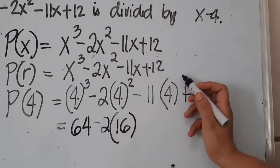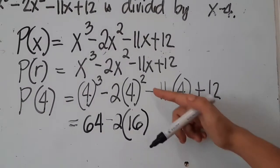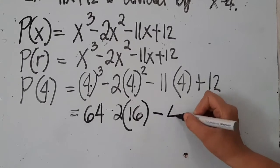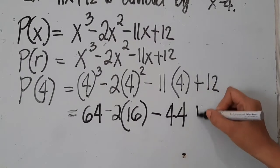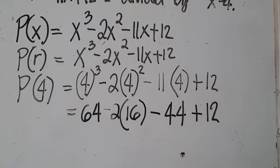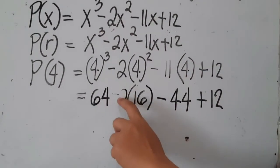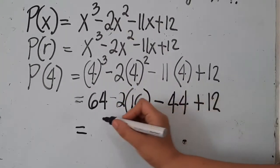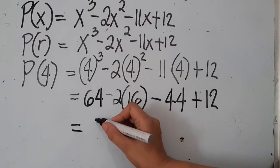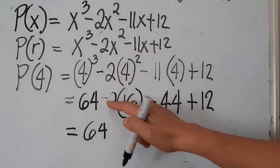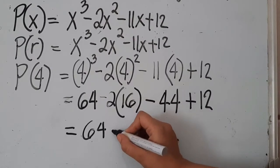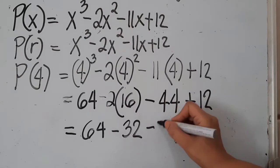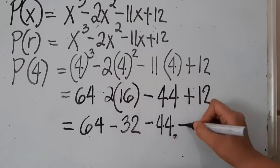Next, since there are no more exponential form here, then we can do multiplication. So negative 11 times 4, we can get our answer, which is negative 44 plus 12. Now, we can do multiplication since there are still 2 times 16. So we can do multiplication. The rest, you can copy so that you will not be confused. So 64 multiplied negative 2 times 16. Answer is yes, that's negative 32. Copy, negative 44 plus 12.